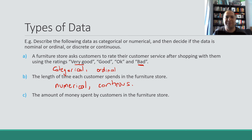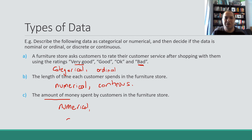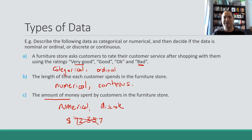Finally, the amount of money spent by customers in the furniture store — that's numerical. Is it discrete or continuous? In this case there are some numbers that can't be spent, for example you can't spend $72 and 35.7 cents. That number doesn't make sense. As soon as we have some numbers that don't make sense — numbers we can't use in a given range — we call that discrete data.